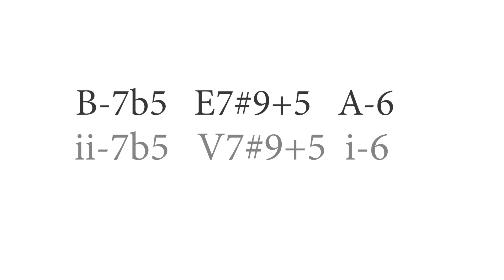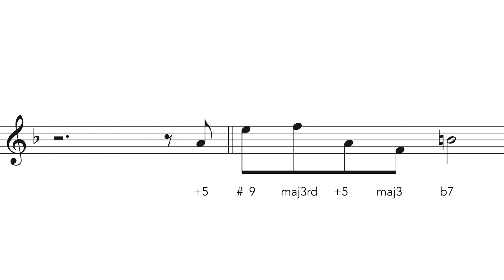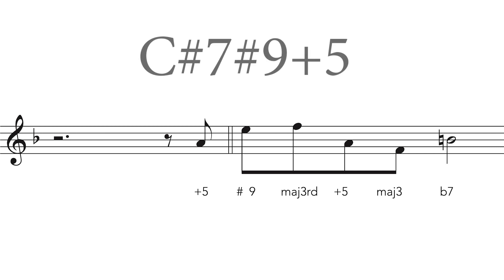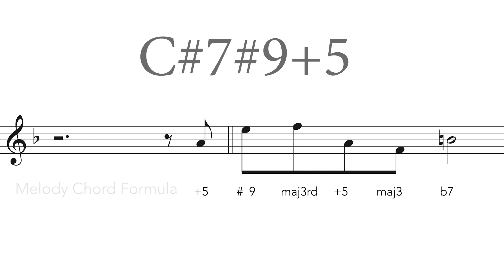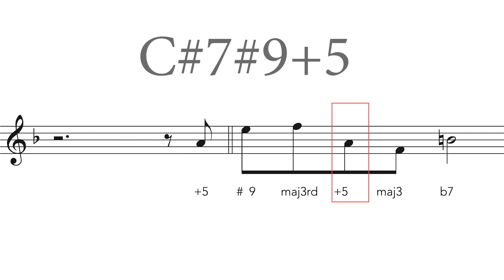Now the second chord of the minor 2-5-1 in the key of A minor is E7 sharp 9 plus 5. How can we superimpose the Recorder Me melody over this E7 sharp 9 augmented 5th? If we go back to the previous slide that showed how the melody notes related to the C sharp 7 sharp 9 augmented 5th chord, we can use the melody chord formula to solve the problem: augmented 5th, sharp 9, major 3rd, augmented 5th, major 3rd, flattened 7th.